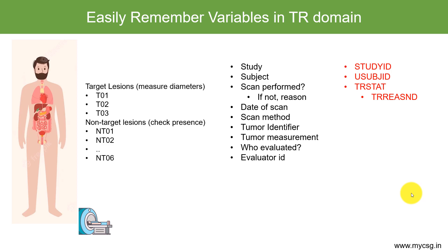If the scan is performed, we store the date of scan in the TRDTC variable. For the method of scan, while in the TU domain we used the variable TUMETHOD, in the TR domain we use the variable TRMETHOD. For the tumor identifier, while in the TU domain it was stored in TULINKID, in the TR domain we store it in the variable TRLINKID.